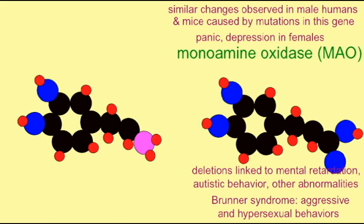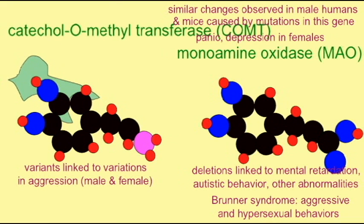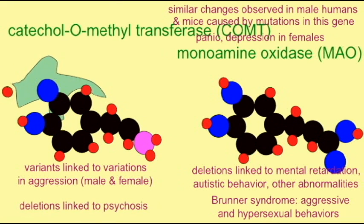Variations in the COMT enzyme have been shown to be involved in variations in aggression in both males and females, and deletions of this gene have been associated with psychosis.